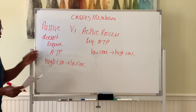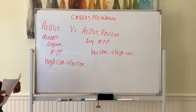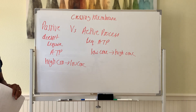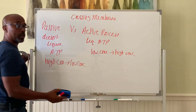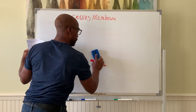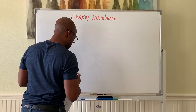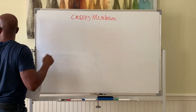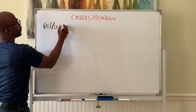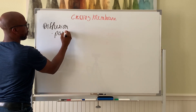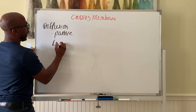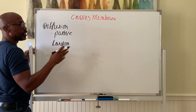One of the most common passive processes in the body is what we call diffusion. Diffusion is a passive process, meaning no ATP is required, and it is defined as the random jiggling movements of particles.